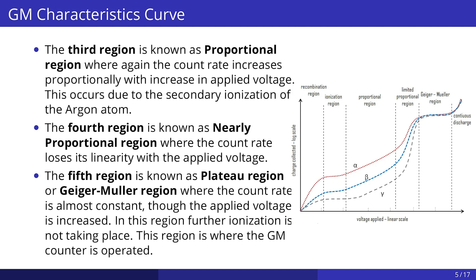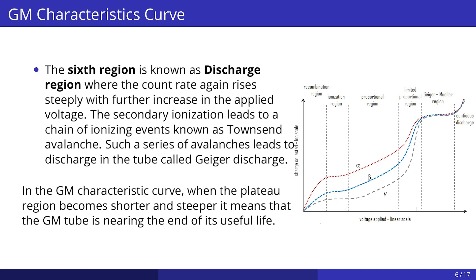The fourth region is known as the nearly proportional region, where the count rate loses its linearity with the applied voltage. The fifth region is known as the plateau region, or Geiger-Muller region, where the count rate is almost constant even though the applied voltage is increased — in this region, further ionization is not taking place, and this is where the GM counter is operated. The sixth region is known as the discharge region, where the count rate again rises steeply. The secondary ionization leads to a chain of ionizing events known as Townsend avalanche, and such a series of avalanches leads to discharge in the tube, called Geiger discharge.